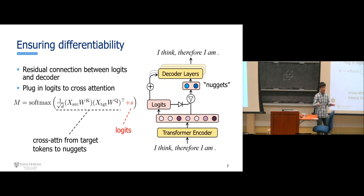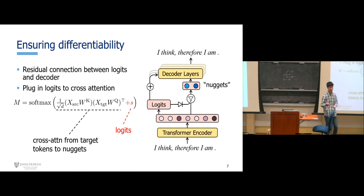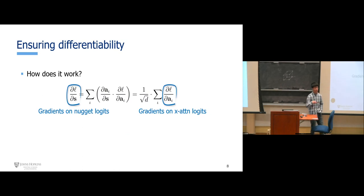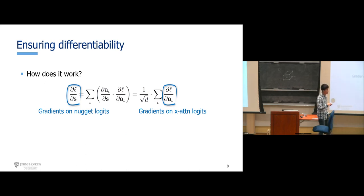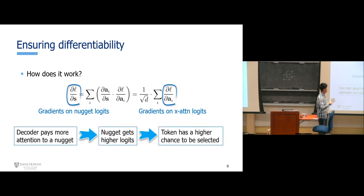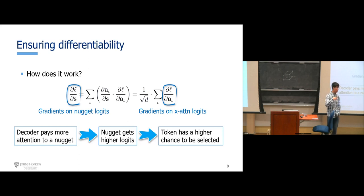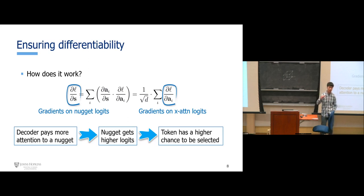This equation looks unusual — we simply put the logics into a random parenthesis and call it end-to-end training. So how and why does it work? Looking at the gradients the logics receive, with some simple deductions, we find that the gradient on the Nugget logic is proportional to the gradient of the cross-attention logics. The semantics of this equation is that if the decoder pays more attention to a Nugget vector, it assigns a positive gradient signal to that Nugget's logics. In the next round of training, that Nugget token will have a higher chance to be selected. This is a positive feedback: if you select something globally useful, it will be promoted and selected more.